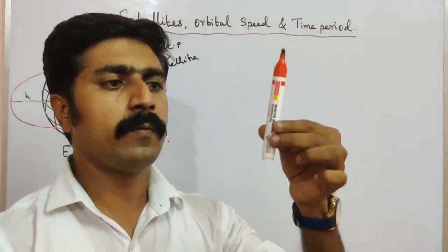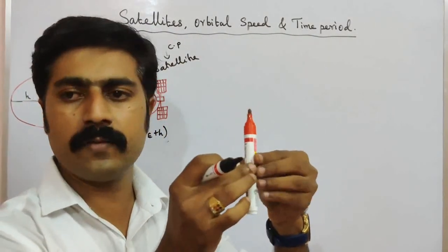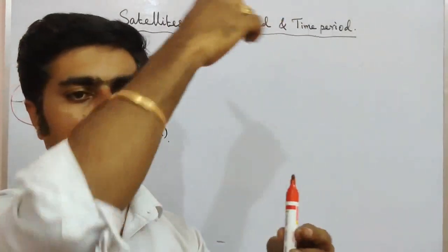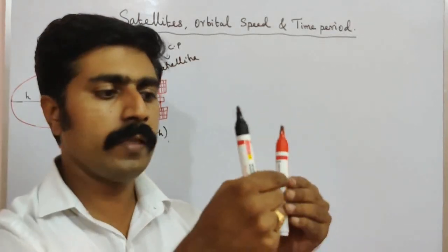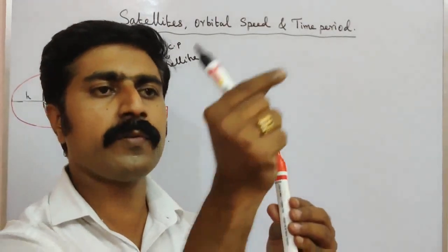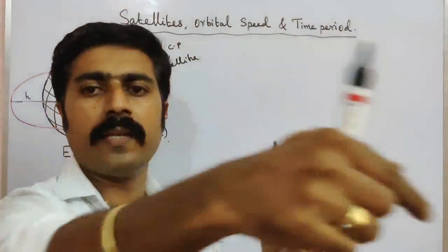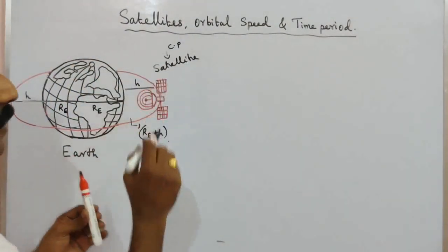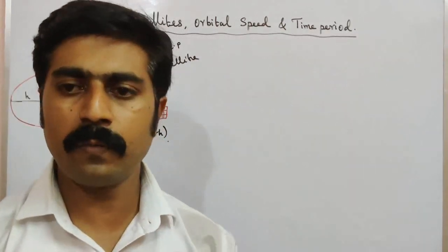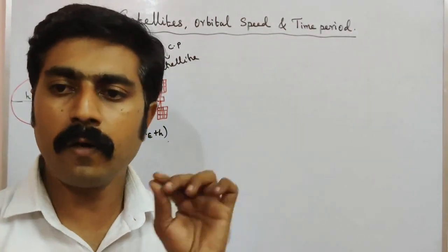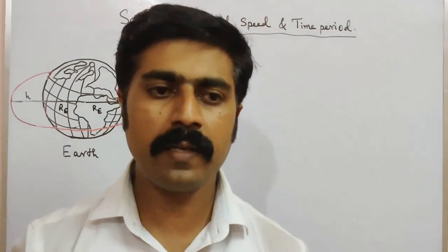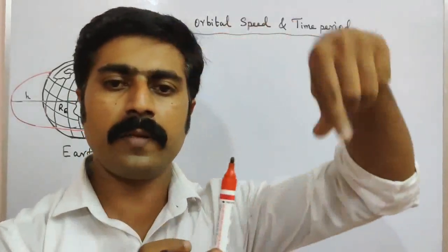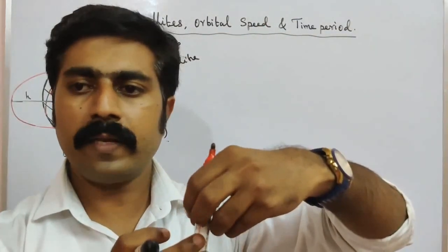The gravitational force acts as the centripetal force. For example, if you tie a stone to a stick at the center and rotate it, that inward tension is the centripetal force. Similarly, when the centripetal force and gravitational force on the satellite are equal, the orbit is circular.